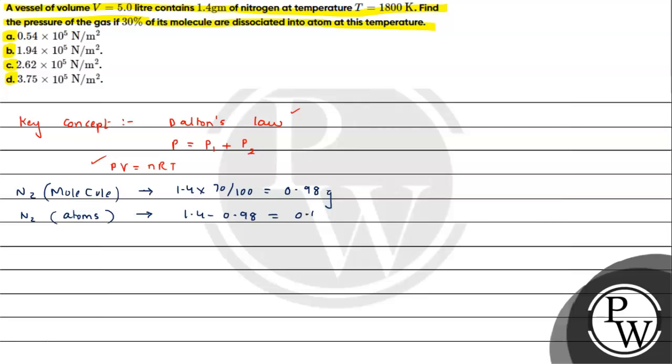We can calculate the number of moles. Number of moles of nitrogen molecule will be weight upon molecular weight, which is 0.98/28 = 0.035. Similarly, number of moles for atoms, n_a, will be 0.42/14 = 0.03. The formula is weight upon molecular weight, and for atomic case the atomic weight is 14.